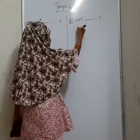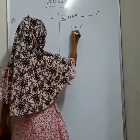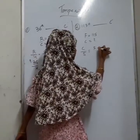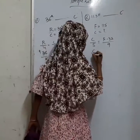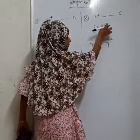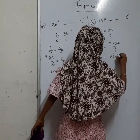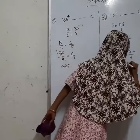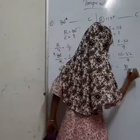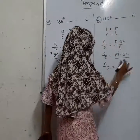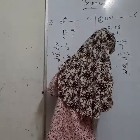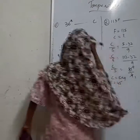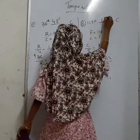Now here F is given as 113 degrees Fahrenheit and C is asked. We know the formula: C by 5 is equal to F minus 32 by 9. Substituting, C by 5 is equal to 113 minus 32 by 9, which is 81 by 9. So C by 5 equals 9, and C is equal to 5 into 9, giving C equal to 45 degrees Celsius. Both problems give 45 degrees Celsius.